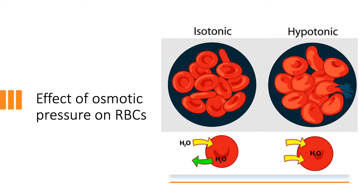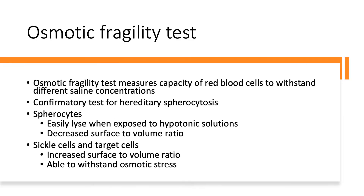In this figure, you can see the effect of osmotic pressure on red blood cells. In an isotonic solution, the red blood cells maintain their normal shape because there is a constant influx and efflux of water into the cell. Meanwhile, in a hypotonic solution — a solution characterized by having less dissolved solids than the cell — more water enters the cell, and this causes the cell to swell up and eventually burst.